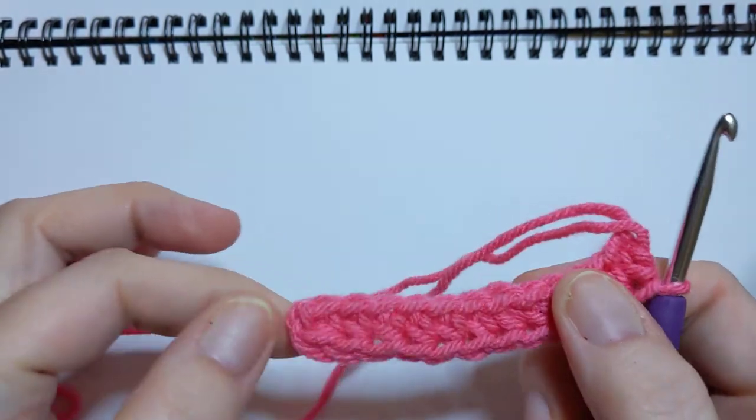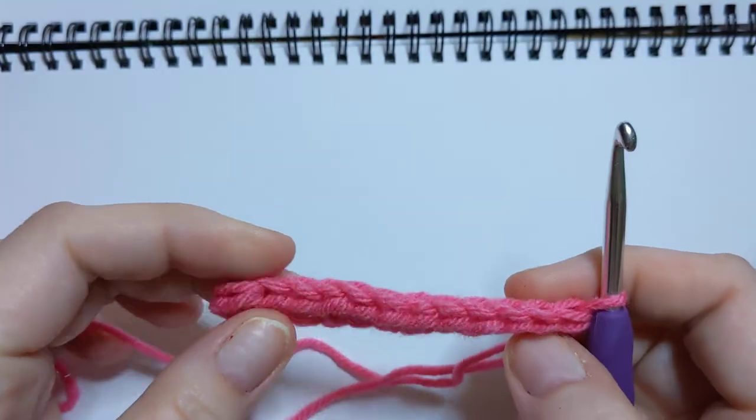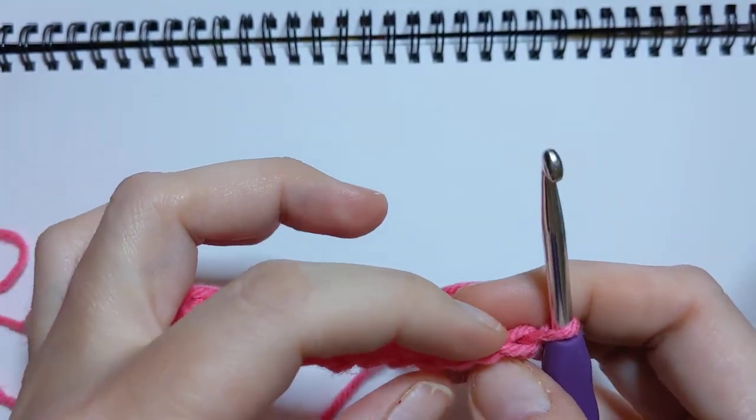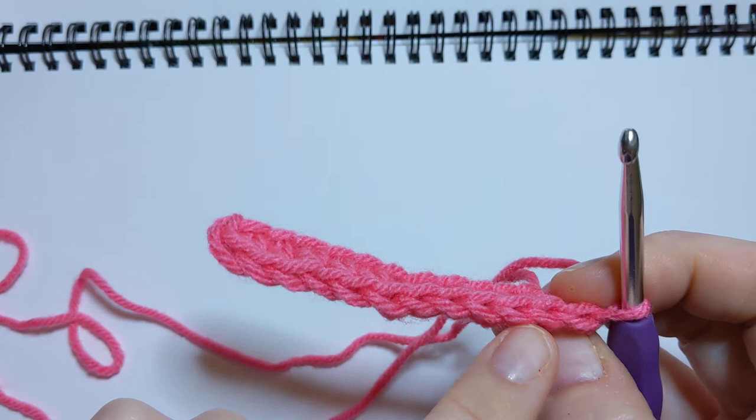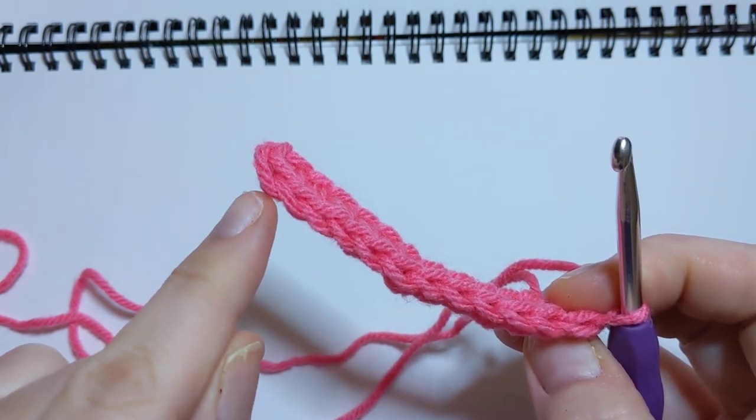That's how we do a decrease when we're doing a half double crochet. I have started off today by doing 12 half double crochets into a foundation chain. There are 12 stitches there: two, three, four, five, six, seven, eight, nine, ten, eleven, and twelve.